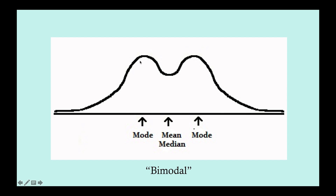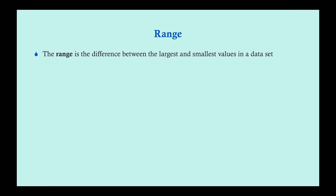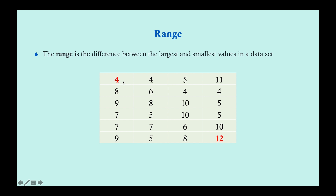Now we're getting into spread — looking at variations and differences. The range is the difference between the largest and smallest values in a data set. Up until now we've been talking about points; now we're talking about how these points relate to one another. In our example, the smallest number is 4 and the largest is 12, so the range is 12 minus 4, which equals 8.